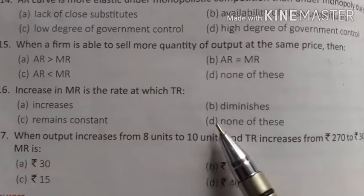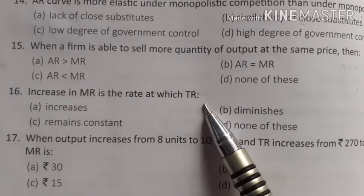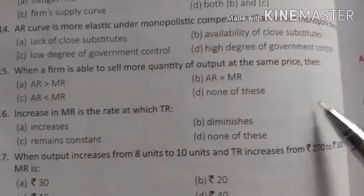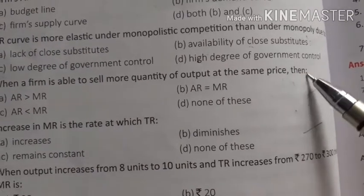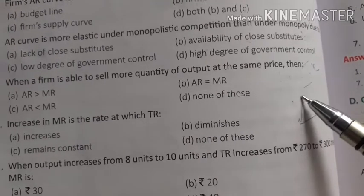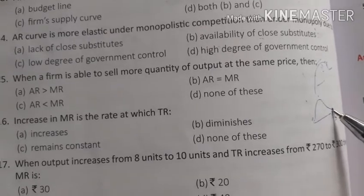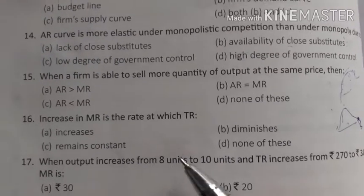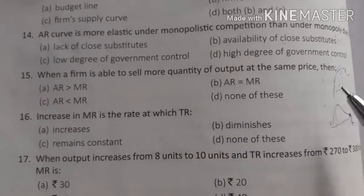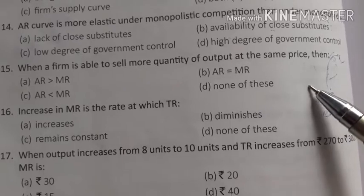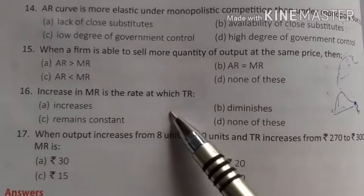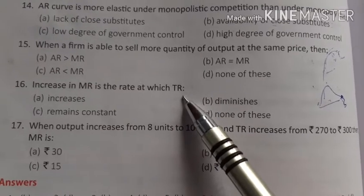MR is the rate at which TR increases. We calculate MR as TRₙ minus TRₙ₋₁, which tells us the change in TR. So MR represents how much TR increases with each additional unit of output.